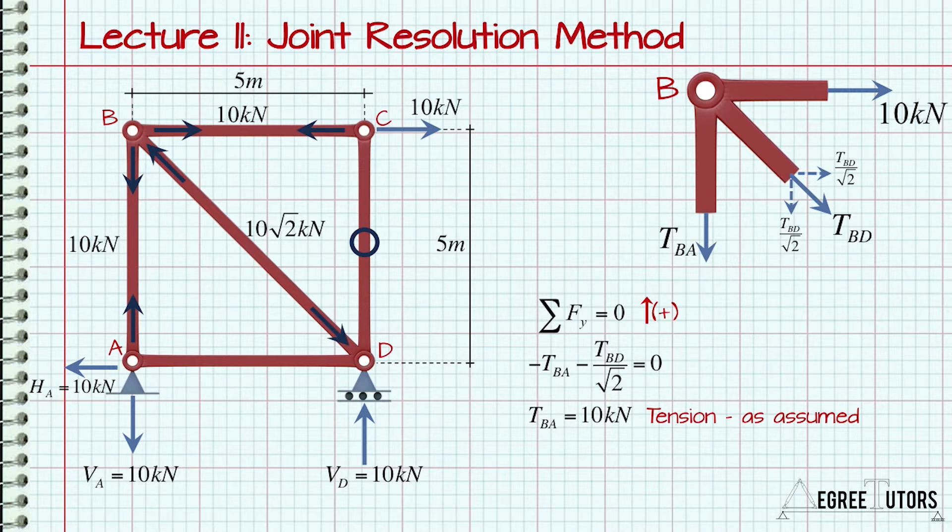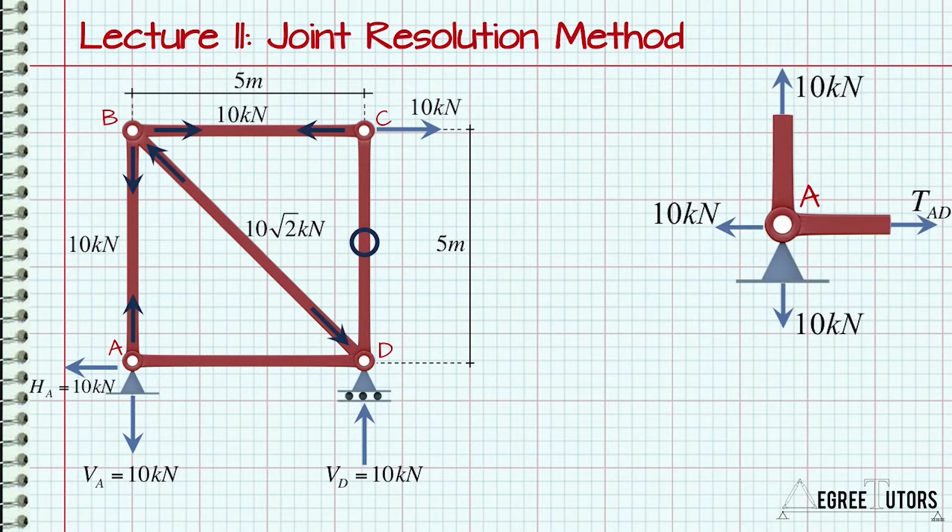The last member force that needs to be identified is TAD. To do this, we could isolate either joint A or D, so we'll go for joint A. Notice that we can already see that the vertical force equilibrium has been established, and we can see by inspection that to maintain horizontal force equilibrium, TAD must equal 10kN's tension. And with that, we've solved for all internal member forces within our structure.